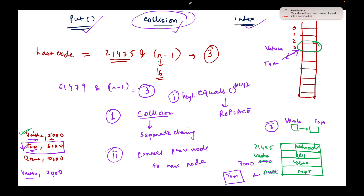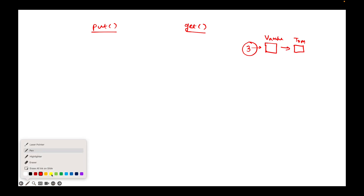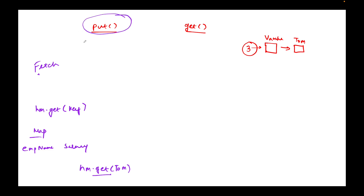Now the next part is how does the get method work? In the previous discussion we covered how the put method works. Now if we want to fetch an entry, we do hashMap.get(key). For example, hashMap.get("Tom") — passing the employee name to fetch the salary for Tom. In the put method, we saw how the hash code calculation determines which bucket index to go to. The first step for get is to calculate the index using the same formula: hash code AND (n-1).